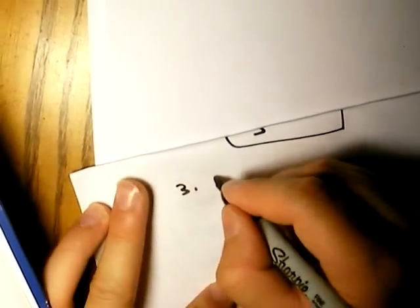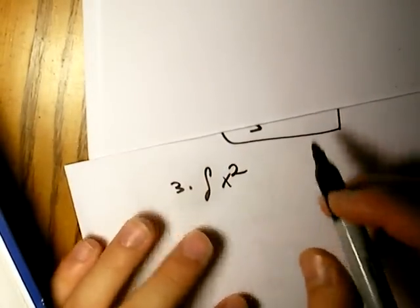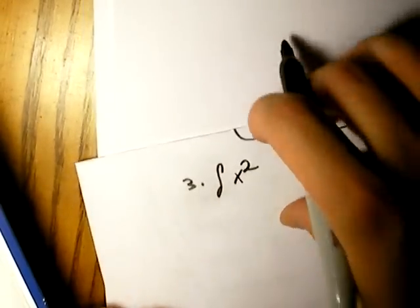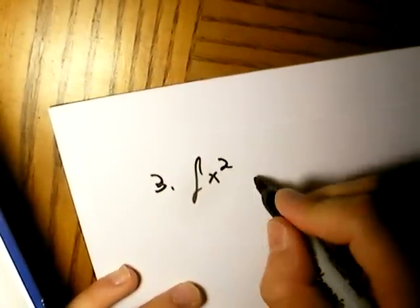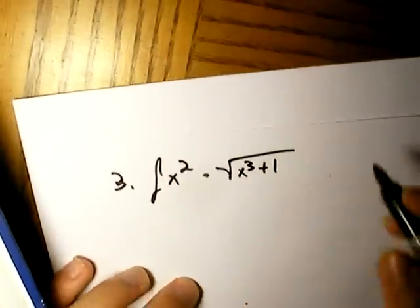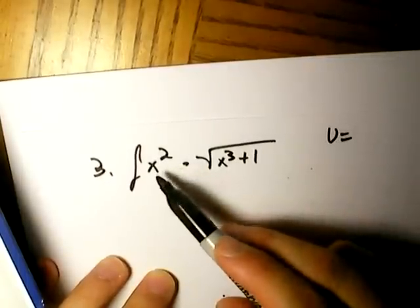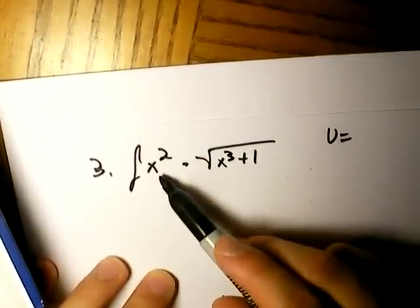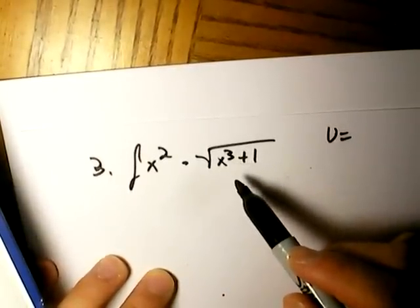So let's go over quickly another problem here. Let's go over problem number 3. Problem number 3 is an integral of x squared. And this is, I'm going to show you how u substitution is going to be easy. It makes things a lot easier with problems like this. Okay, so we have problem 3, which is integration of x squared times the root of x cubed plus 1.